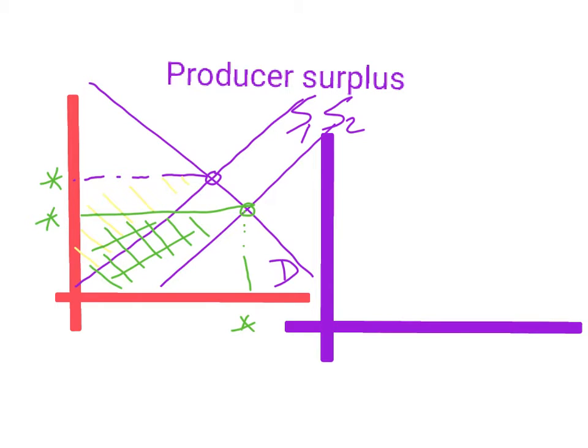From the yellow area to the green area, if producer surplus increases or not, and if you don't have exact numbers, you would say that the change is indeterminate.